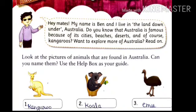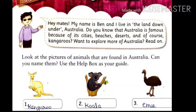Hey mates! My name is Ben and I live in the land down under — Australia. Do you know that Australia is famous because of its cities, beaches, deserts, and of course, kangaroos? Want to explore more of Australia? Read on! Look at the pictures of animals that are found in Australia. Can you name them? Use the help box as your guide.